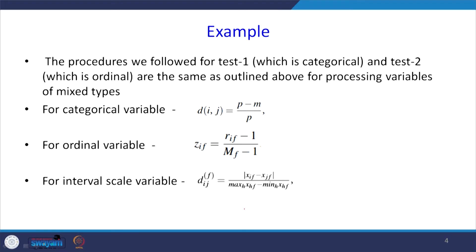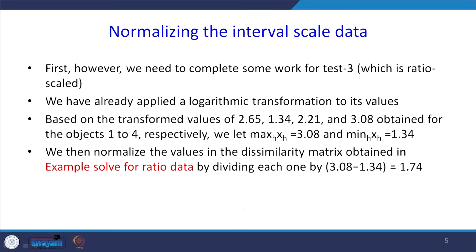For an interval scaled variable: D_IF for feature F equals |X_IF minus X_JF| divided by (maximum value of HX_F minus minimum value of HX_F). For ratio scaled data, we first apply a logarithmic transformation. The transformed values obtained are 2.65, 1.34, 2.21, and 3.08 for objects 1 to 4 respectively. The maximum value is 3.08 and the minimum value is 1.34, giving a range of 1.74.